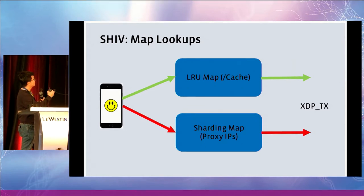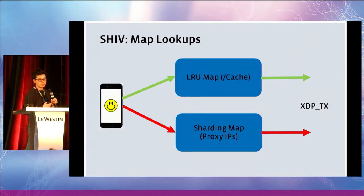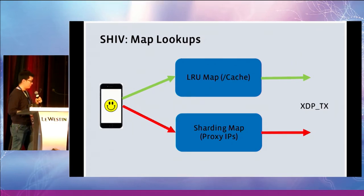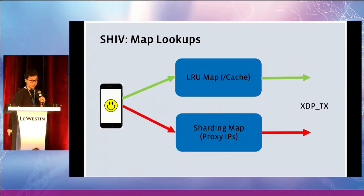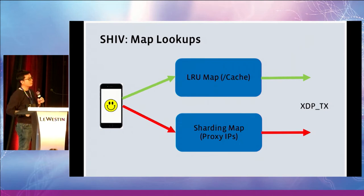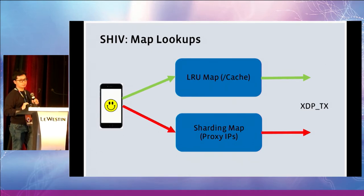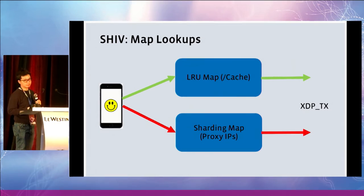When a new TCP connection arrives — meaning we get a TCP SYN packet — it first looks up the sharding map to figure out which proxy to send to, gets the proxy IP, and sends the TCP SYN packet to that proxy. At the same time, it creates an entry for that TCP flow to remember which proxy IP it sent that flow to. When subsequent packets come in for the same TCP flow, we look up the LRU map to find where we sent that flow before — ensuring we always send the flow to the same proxy machine. Otherwise, sending it to a different machine would cause a TCP reset.